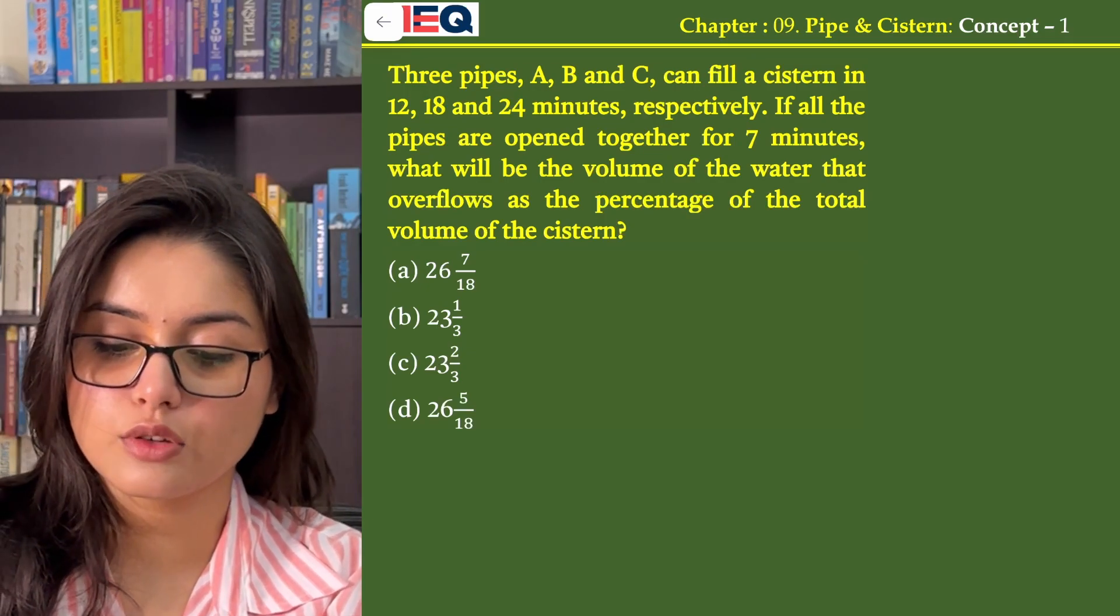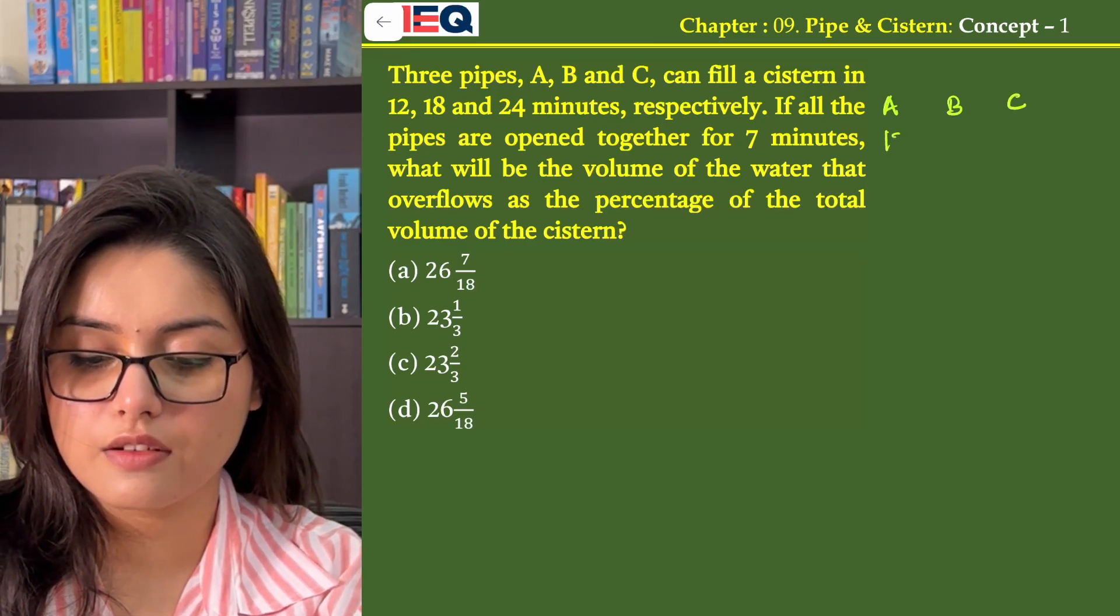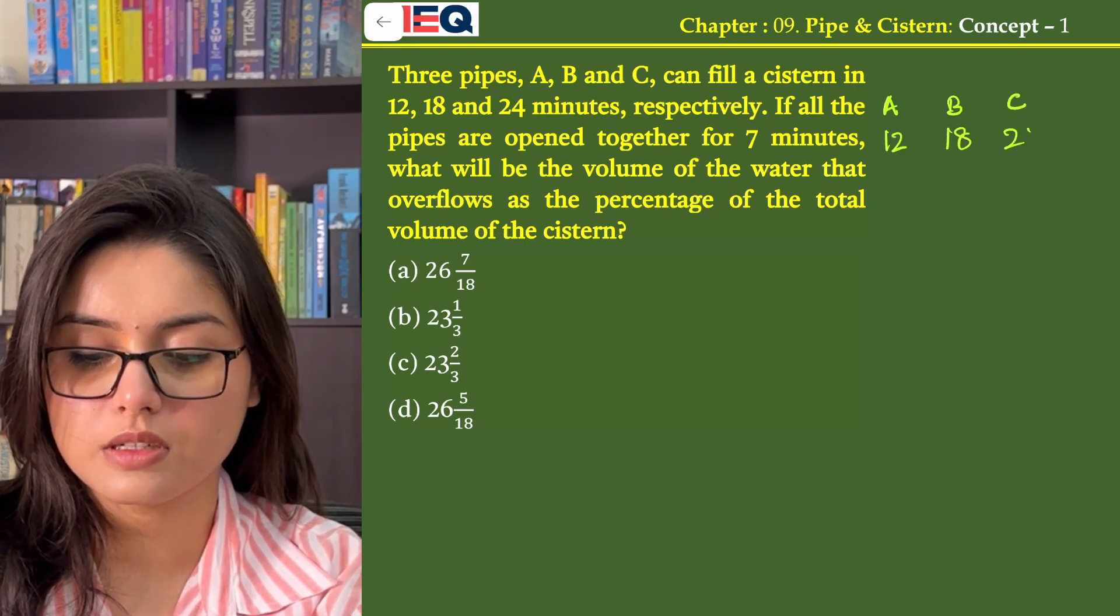So given in the question, we know that pipe A, B and C fills the cistern in 12, 18 and 24 minutes.